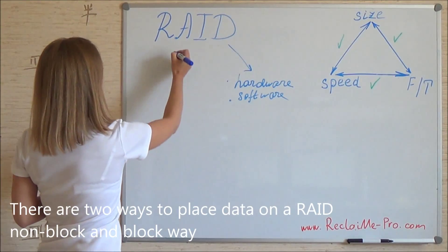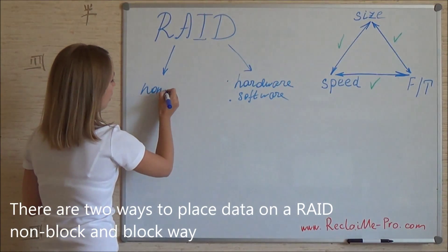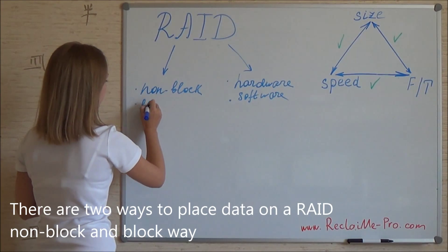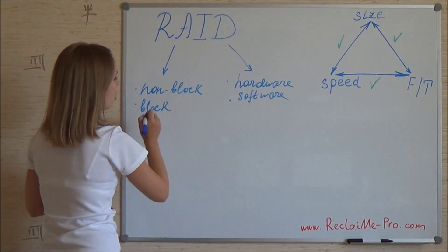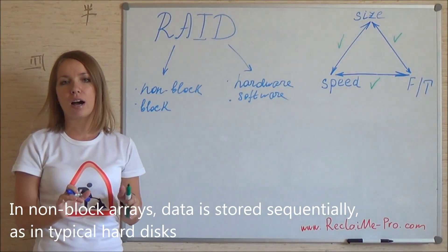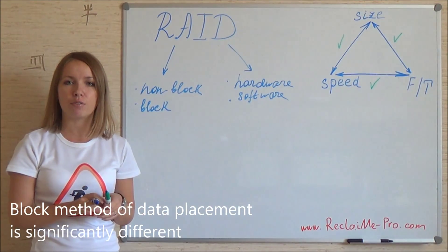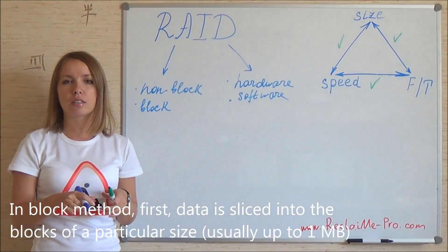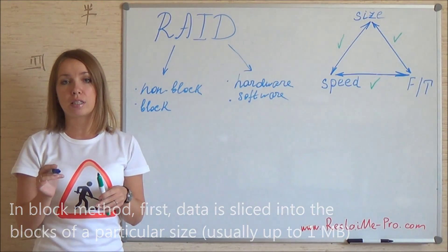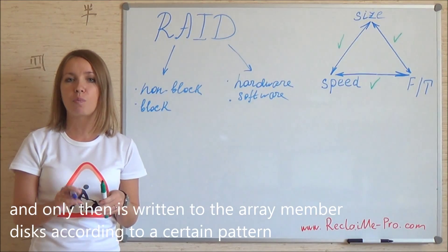There are two ways to place data on a RAID: the non-block way and the block way. In non-block arrays, data is stored sequentially as in a typical hard disk. The block method is significantly different — in block arrays, data is first sliced into blocks of a particular size, usually up to 1MB, and only then written to the RAID member disks according to a certain pattern.